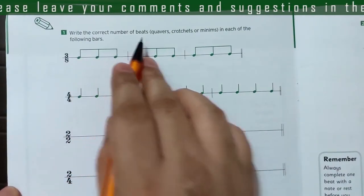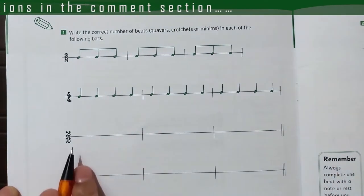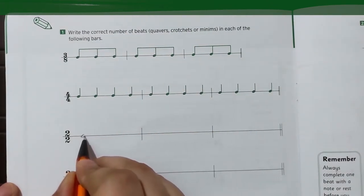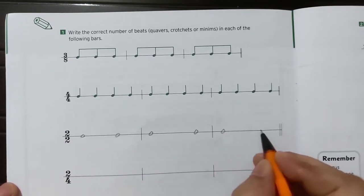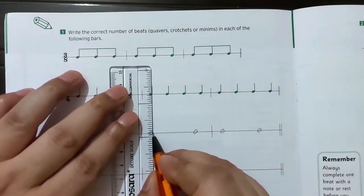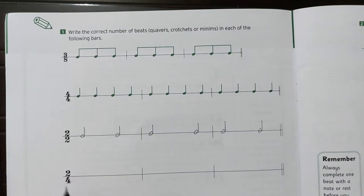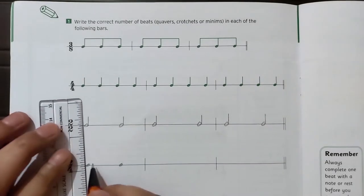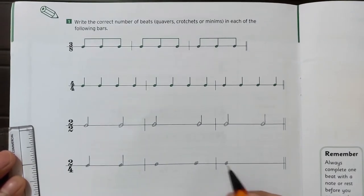Now on the next page, the exercise says: write the correct number of beats — quaver, crotchet, or minim — in each of the following bars. Let's start with two by two: there should be two minim beats, so we write two minim beats. Next is two by four, which means two crotchet beats in a bar — we are just showing the natural meaning of the time signature, though you can also write it other ways.